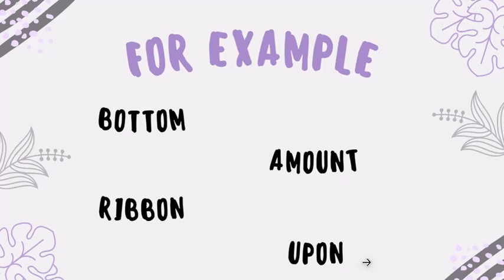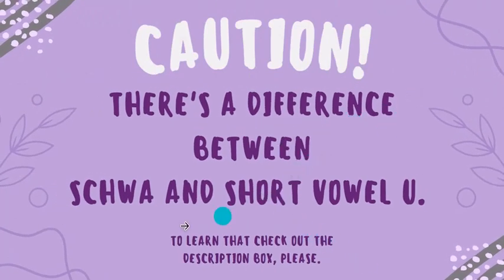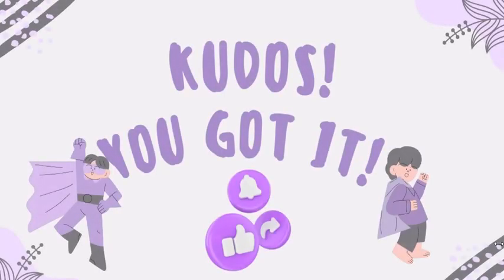You can help them with continuous practice and by reading more and more books. Please remember one last thing: there is a difference between schwa and the short vowel sound. If you want to learn this difference, check out the description box. And this is the end of today's video. Hope you've got it! If you found this video helpful, please like, subscribe, and share. Write a comment so YouTube can bring my post up. I'll see you soon with something new. Take care, bye for now, and don't forget to make it a great day!